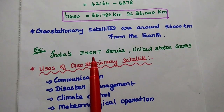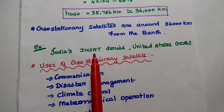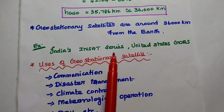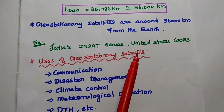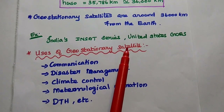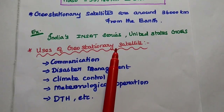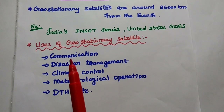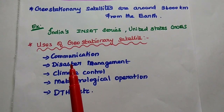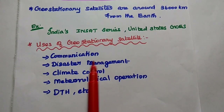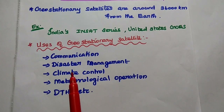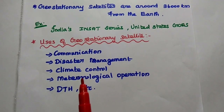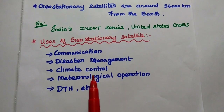Examples of geostationary satellites are India's INSAT series and the United States GOES (Geostationary Operational Environmental Satellite). Major applications of geostationary satellites include communication, disaster management, climate monitoring, meteorological operations, and DTH (Direct-to-Home) broadcasting.